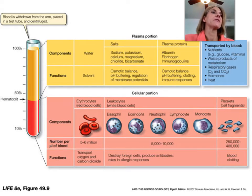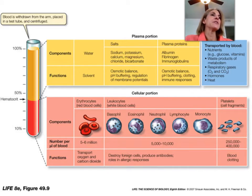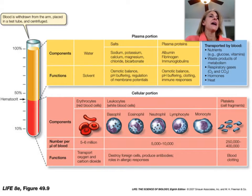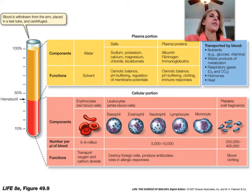Jumping over to the plasma proteins on the chart: we talked about albumin, which is for osmotic pressure. We talked about fibrinogen — that's the protein needed for blood clotting. Then you have your immunoglobulins, which are your antibodies, and those are going to be used to fight infections.